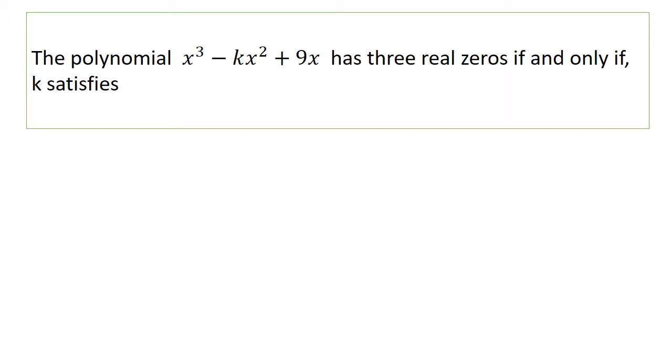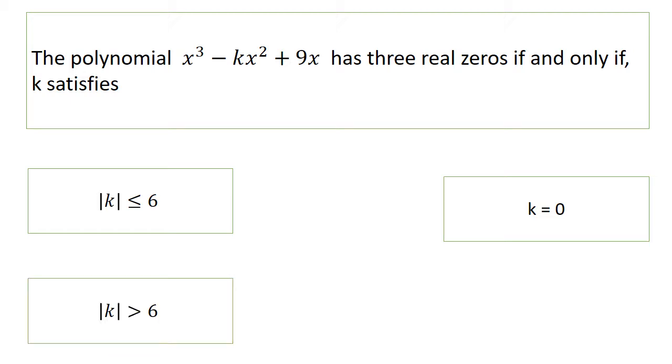Next: the polynomial x³ - kx² + 9x has three real zeros if and only if k satisfies... For what value of k does this polynomial have three real zeros? If |k| ≤ 6, k = 0, |k| > 6, or |k| ≥ 6?